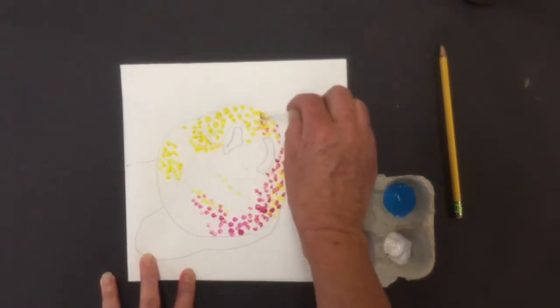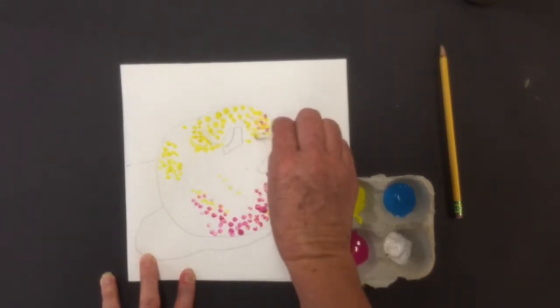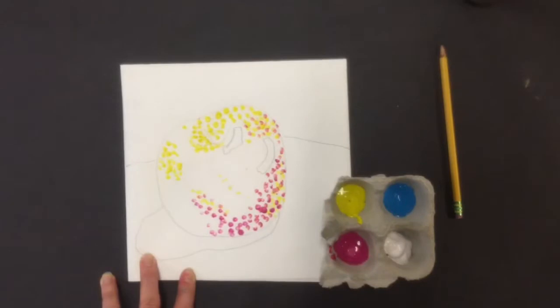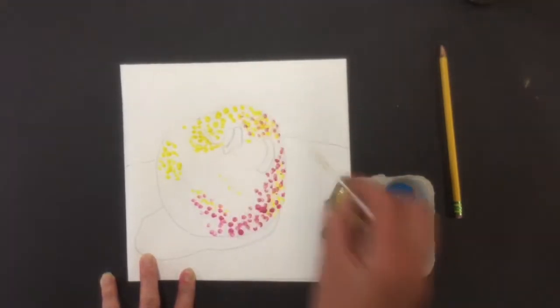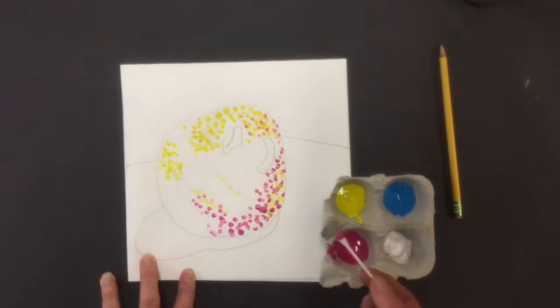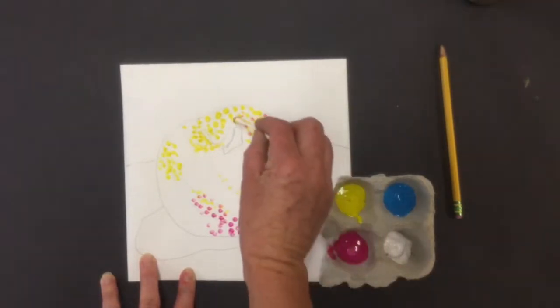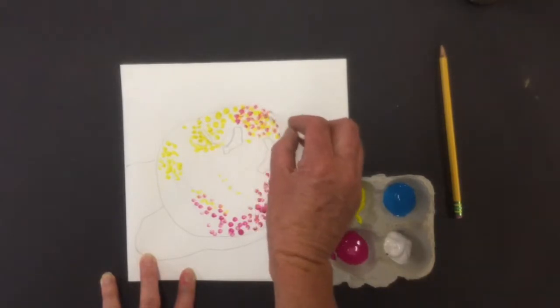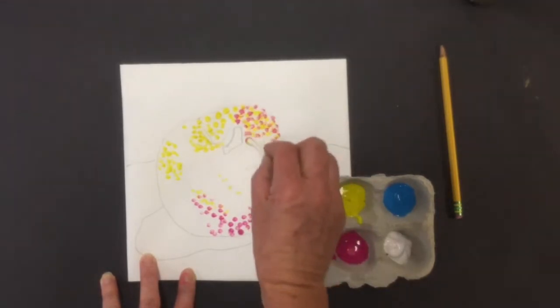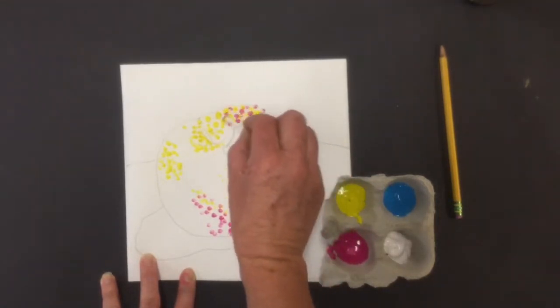So now as I start to add my magenta here, as we look at it, it looks orange because the magenta is blending in with my yellow. If you get too much paint on your q-tip, you can dab it on the egg crate, or you can get a piece of free draw paper and use that as scratch paper for dabbing.